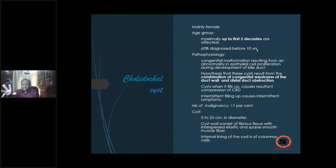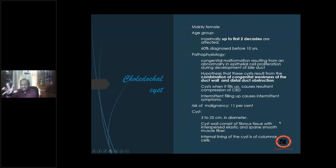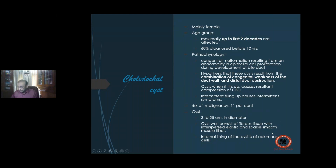Sixty percent are diagnosed before 10 years of age — a pre-pubertal age group is most commonly involved, and females are the most commonly affected sex. Cysts range from 3 to 25 cm in diameter. The cyst wall has very sparse smooth muscle fibers, and the epithelial lining is columnar. The important risk is malignancy in 11 percent of cases.